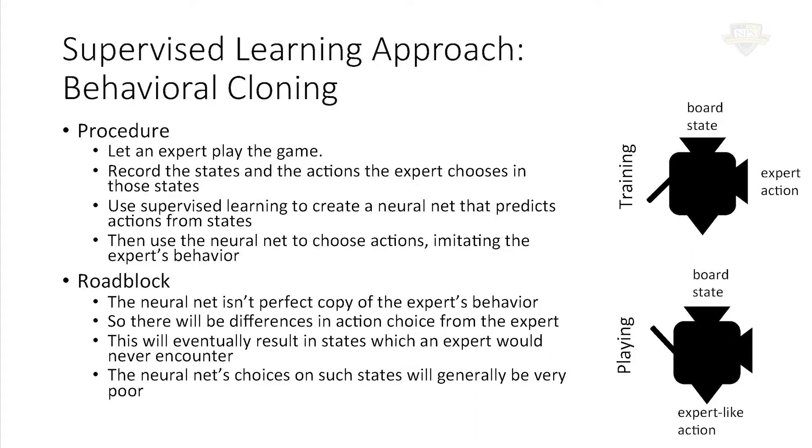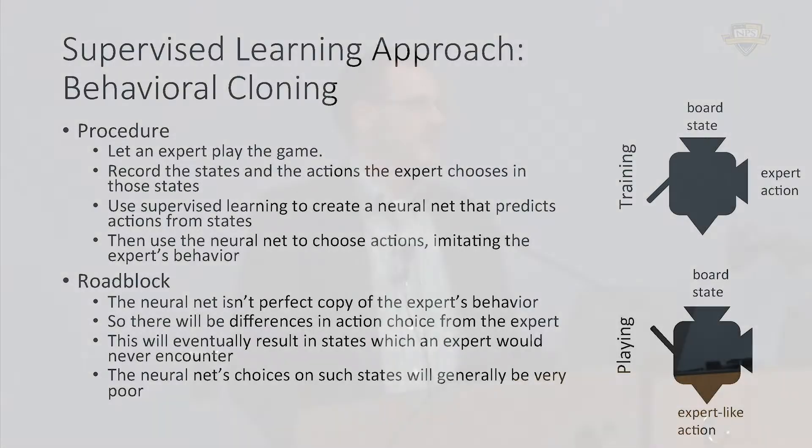But the problem is that a neural net for a complicated problem is never a perfect copy of an expert's behavior — there are always at least slight differences, and those differences build up. The result over time is that this system will be presented with board states that are terrible — states an expert would never let himself get into — but the behavior-cloned learner will get into and won't know what to do. That's the accepted critique of behavioral cloning and why we don't see many systems of this nature.